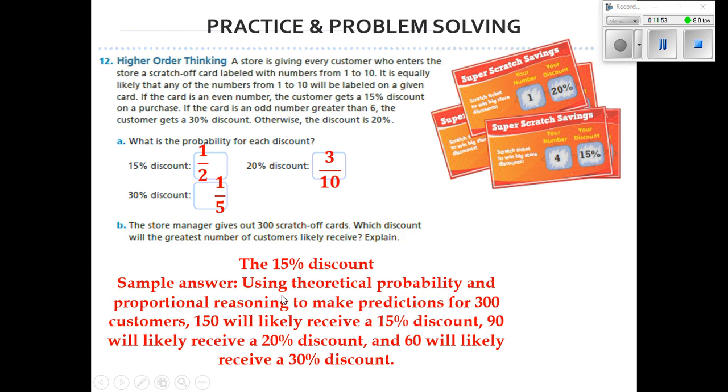Why? Using theoretical probability and proportional reasoning to make predictions for 300 customers, 150 of those customers will likely receive 15% discounts, 90 will likely receive 20%, and 60 will likely receive 30%. Remember, we have to cross-multiply this to the number, which you're talking about is 300. Does everyone understand that?